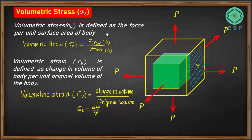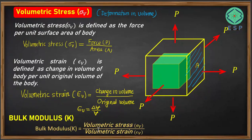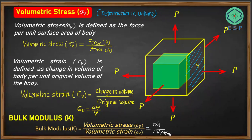Since we have volumetric stress and volumetric strain, we can also define the modulus of elasticity for volumetric deformation, which is called bulk modulus K. Bulk modulus is the ratio of volumetric stress to volumetric strain — that is, load per unit surface area divided by delta V per unit original volume.